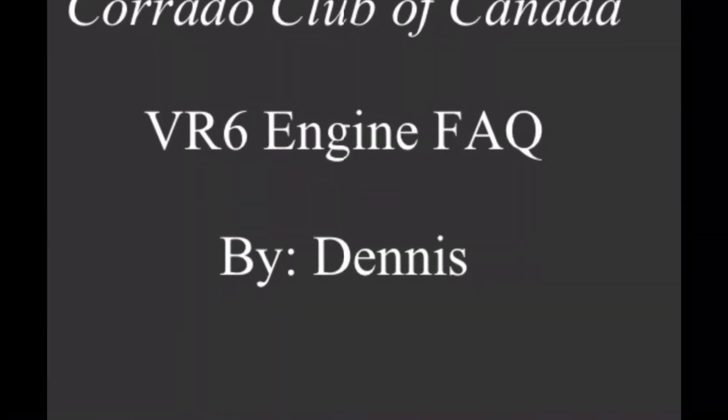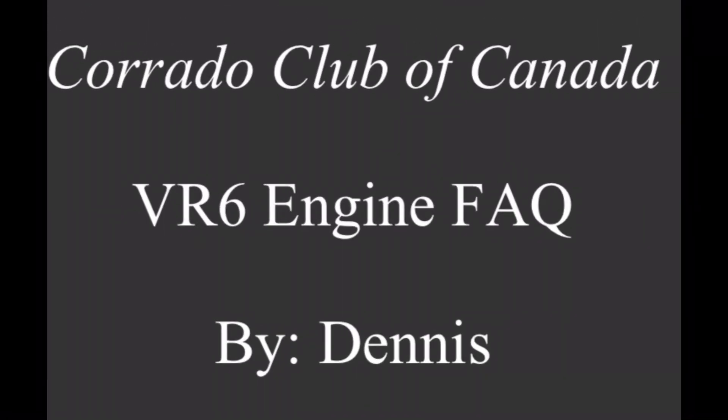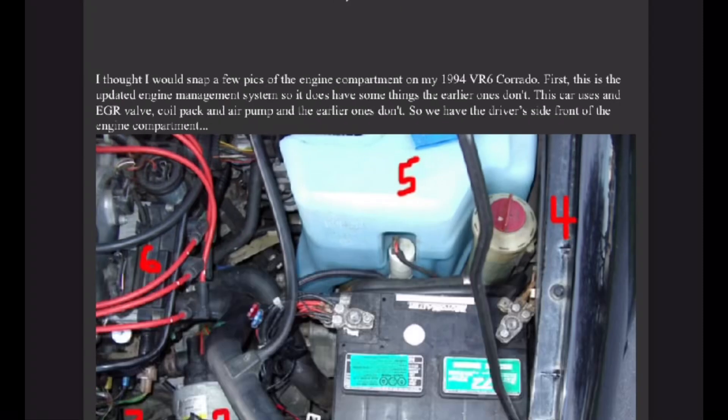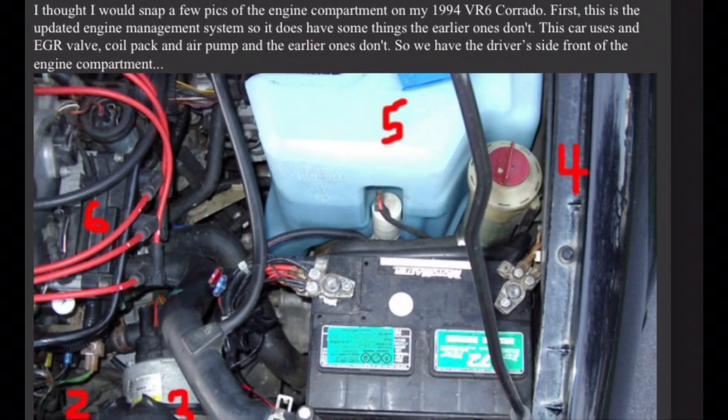Corrado Club of Canada VR6 engine frequently asked questions by Dennis. I thought I would snap a few pics of the engine compartment on my 1994 VR6 Corrado. This is the updated engine management system, so it does have some things the earlier ones don't. This car uses an EGR valve, coil pack, and air pump, and the earlier ones don't.